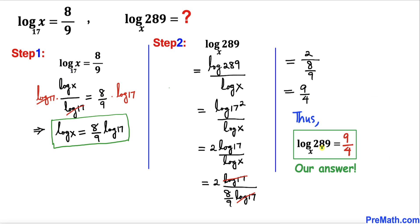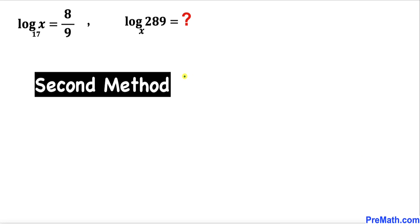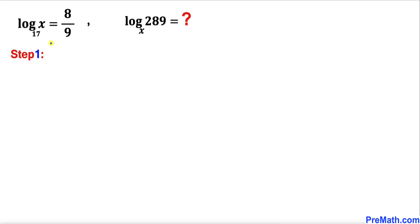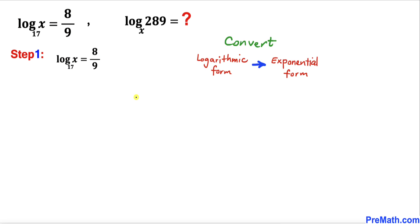So log of 289 with base x turns out to be 9 divided by 4. Now let me share with you the second method. Let's focus on the first equation again, and we're going to convert this logarithmic form into exponential form using the conversion formula.